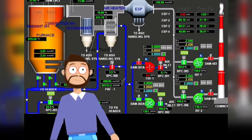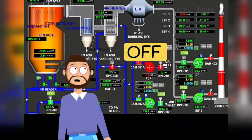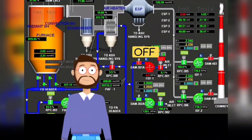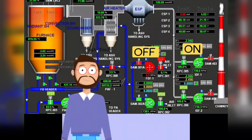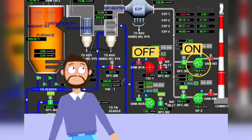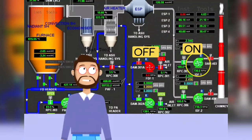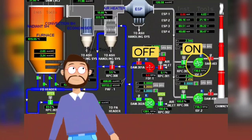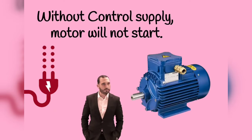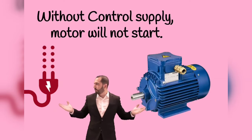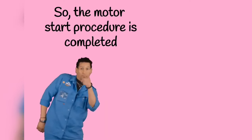Usually, red color is used when the motor is off or stopped. And when the motor turns on, to show it, it turns green — meaning when the motor starts, its color becomes green. Friends, one thing to be kept in mind here is that without control supply, the motor will not start. So, the motor start procedure is completed.